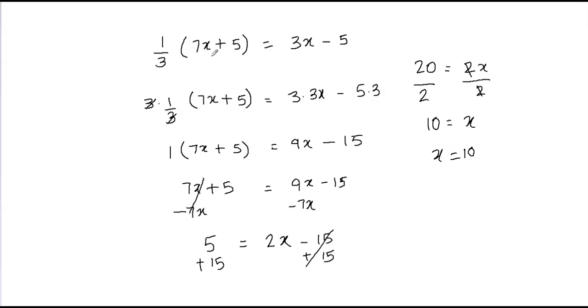That's making the problem more complicated because you're distributing inside the parentheses and then getting rid of the fraction. Here what we did is we just multiplied both sides of the equation by 3, eliminated the fraction, and then got rid of the parentheses.